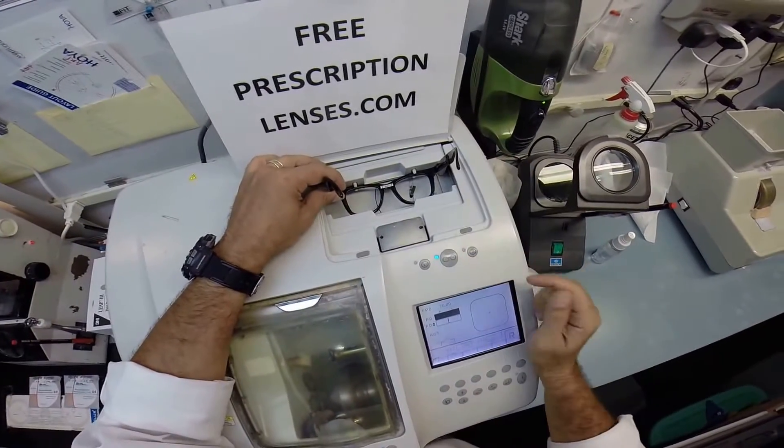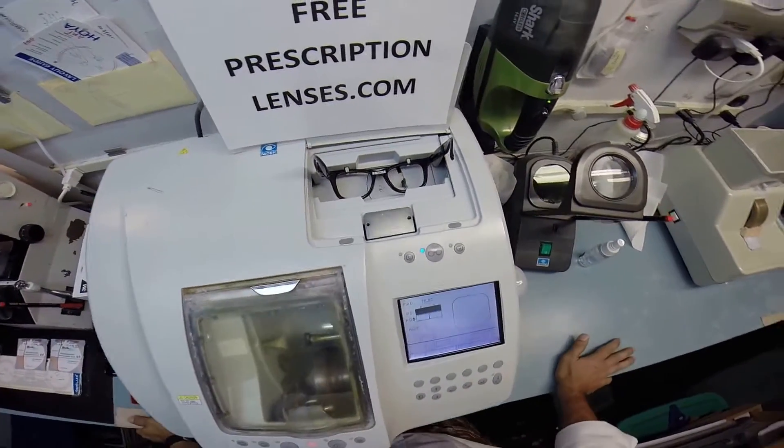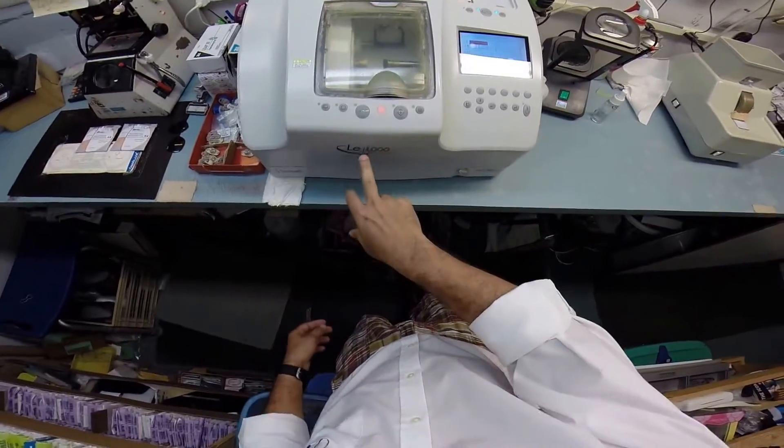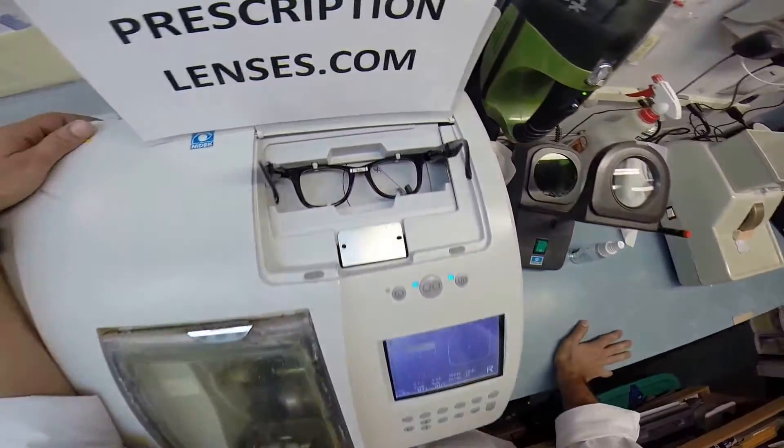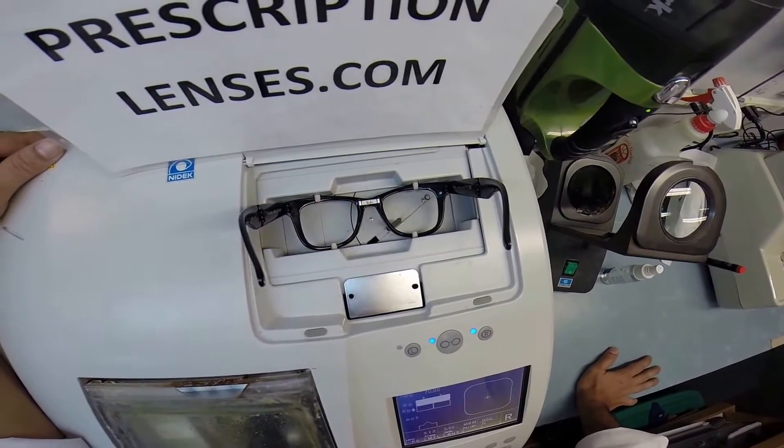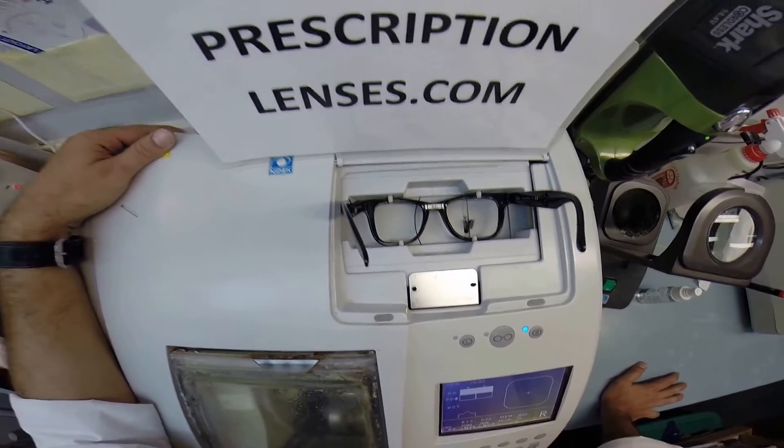The first thing I need to do is trace the shape of his frame. I'm using my Santinelli - this is my thirty thousand dollar LE 1000 patternless edger. The stylus is tracing the shape of the right lens, then it's gonna move over and trace the shape of the left.